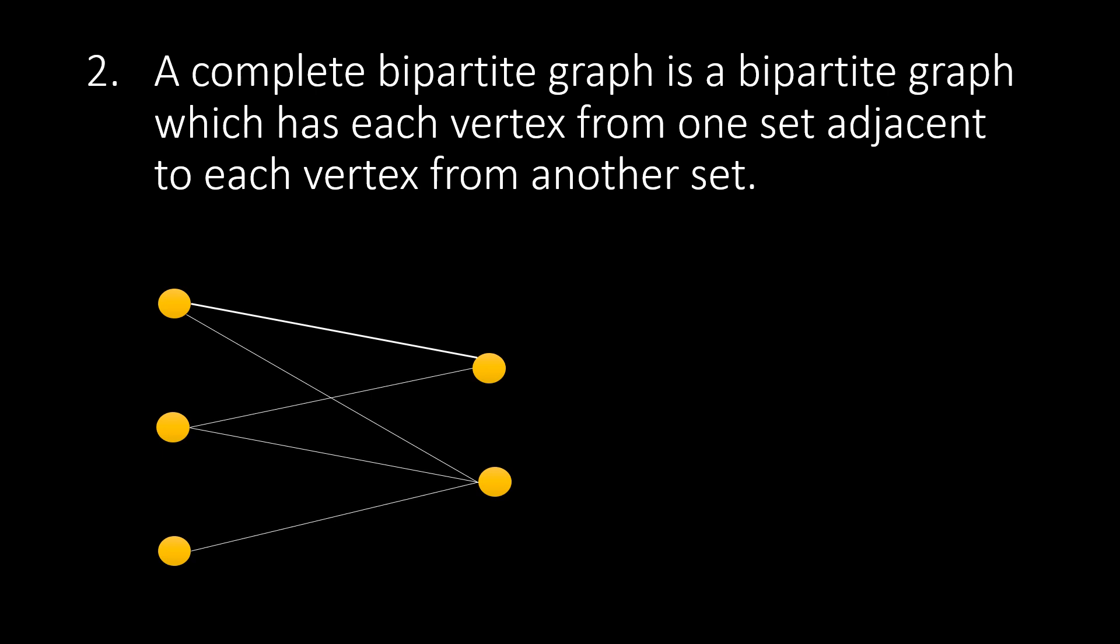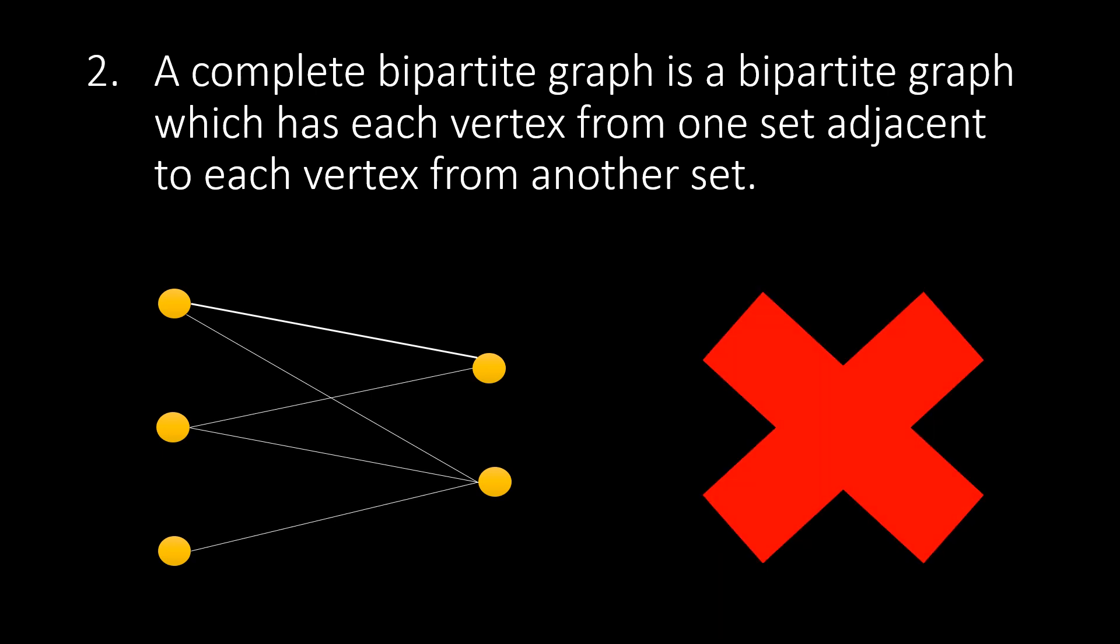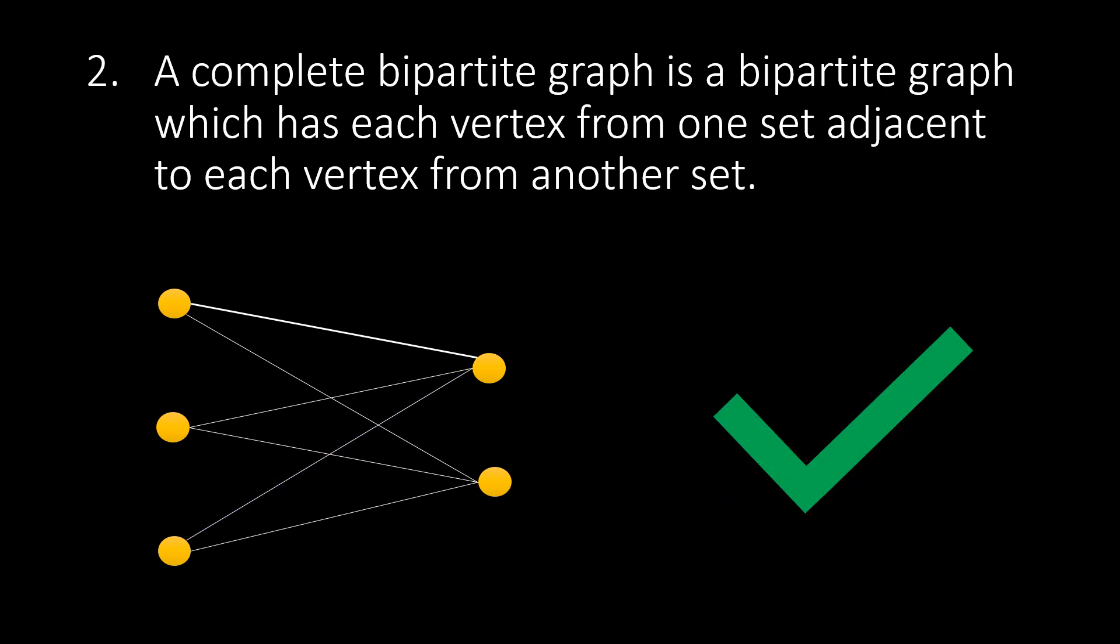We again take our previous example. We know it is a Bipartite Graph but not a complete Bipartite Graph. For a graph to be a complete Bipartite, all the vertex from one set should be adjacent to vertex from another set. So, if we have this edge in the existing graph, then the graph becomes a complete Bipartite Graph.